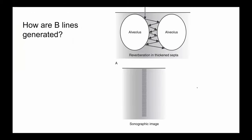How are B lines generated? Even in the setting of interlobular septal thickening, air is still the predominant material. As the ultrasound beam comes between two alveoli, it bounces between air-filled alveoli; some of those ultrasound beams return to the probe and generate this profile through reverberation. That's the current theory of how they're produced.